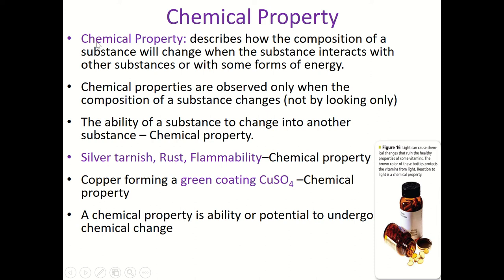There's an important distinction between chemical property and chemical change. A chemical property means a substance has the potential to undergo a change — for example, paper is flammable, meaning it can burn, but that doesn't mean all paper is burning right now. A chemical change is when the paper actually burns and turns into ash and smoke. Similarly, iron can rust — that's a chemical property — but when it actually forms rust, that's a chemical change.